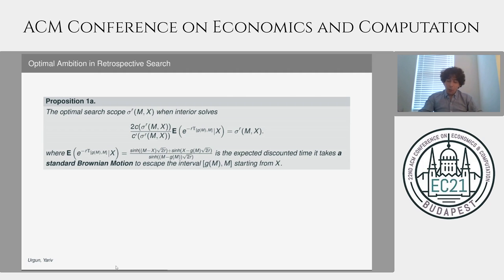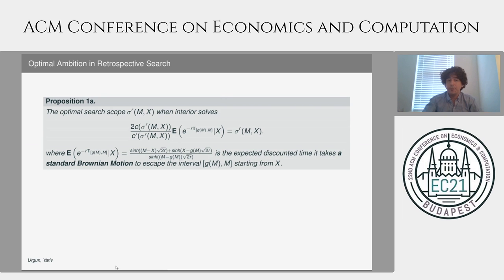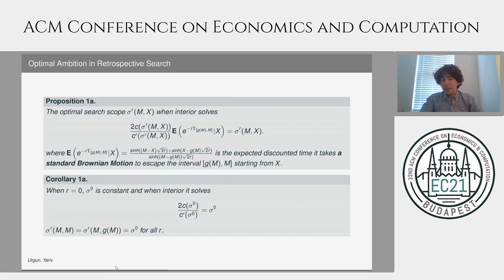Now let me tell you what the optimal search scopes are. The optimal search scope sigma(m,x), when interior, is going to satisfy the formula you see here. On the left-hand side, we see that the costs themselves show up as well as the marginal costs. They are multiplied by an escape probability of a standard Brownian motion, where our standard Brownian motion is trying to escape from an interval identified by the maximum and the boundary attached to that maximum. Now, if you were to actually have no discounting, you will immediately see that the middle term is going to vanish.